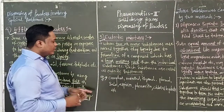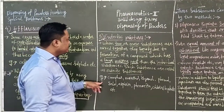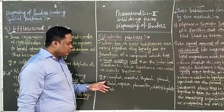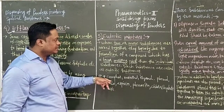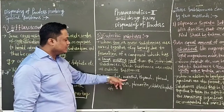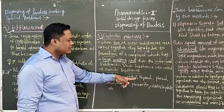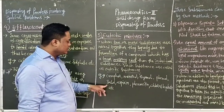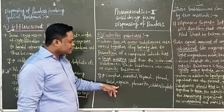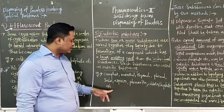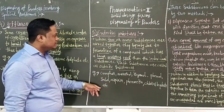Examples of eutectic substances include camphor, menthol, thymol, phenol, salol, aspirin, chloral hydrate, and others.